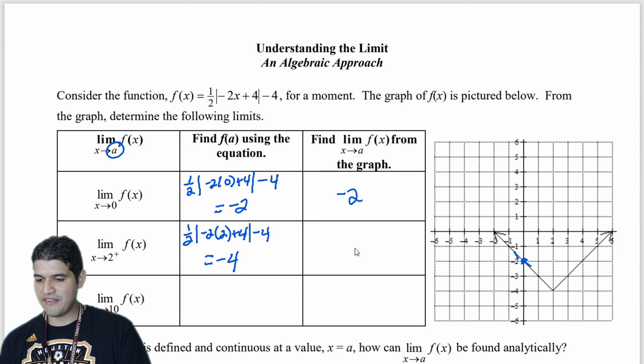Now let's look at the graph again at 2 from the right side. So 2, and I'm only following it from the right side. So right there. And the y value that it tends to go to is right here, and that looks to be equal to negative 4.